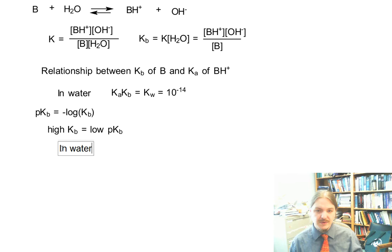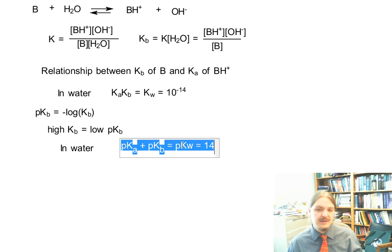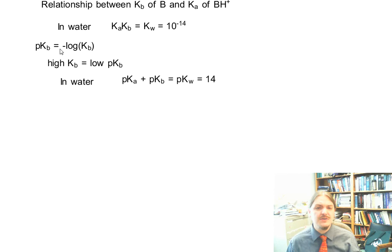And so because of the properties of logarithms, that means in water we can change this relationship to be PKA plus PKB is equal to PKW, which is 14. So if you know the Ka of the conjugate acid, and very frequently the KAs or PKAs of acids are more likely the things that are listed, so you can go find them, you can calculate in water the KB or PKB.